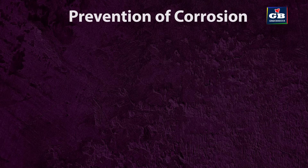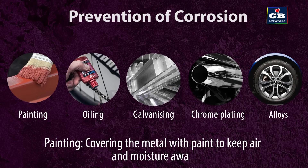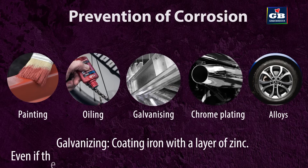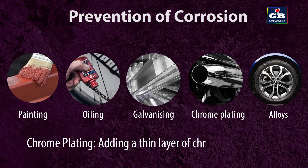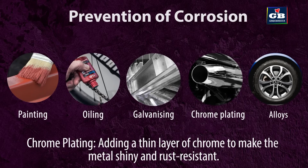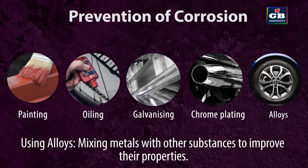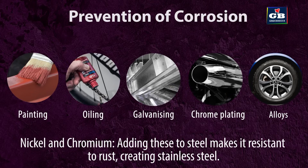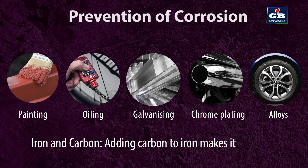Prevention of corrosion — to prevent rusting, we use different methods: Painting — covering the metal with paint to keep air and moisture away. Oiling — applying oil to create a protective layer. Galvanizing — coating iron with a layer of zinc; even if the zinc coating breaks, it still protects the iron underneath. Chrome plating — adding a thin layer of chrome to make the metal shiny and rust-resistant. Using alloys — mixing metals with other substances to improve their properties. For example, adding carbon to iron makes it stronger; adding nickel and chromium to steel makes it resistant to rust, creating stainless steel. These methods show how combining different materials can change and improve the properties of metals.